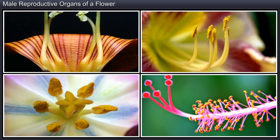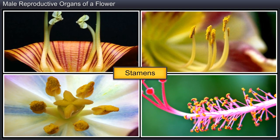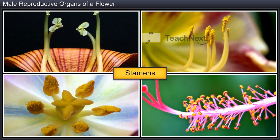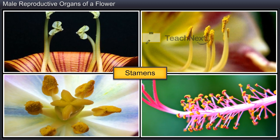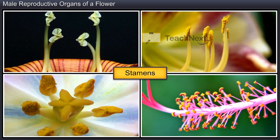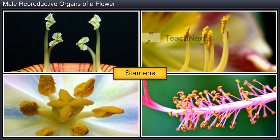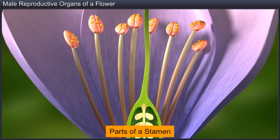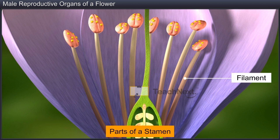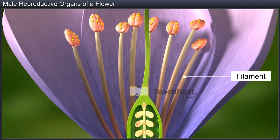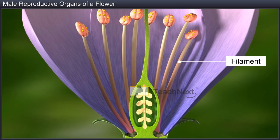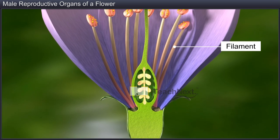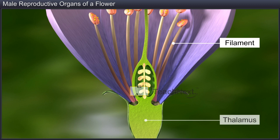Though the number and size of stamens in an Androecium differ across species of flowers, the basic structure remains the same. Every stamen consists of a filament and an anther. The filament is a long and slender stalk whose proximal end is attached either to the thalamus or the petal of the flower.